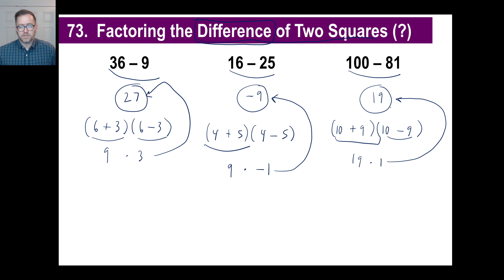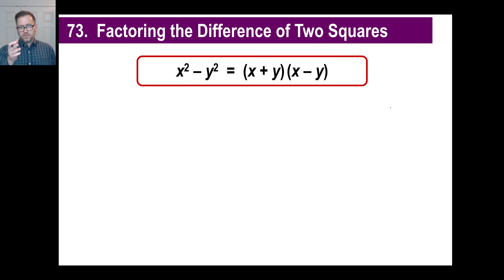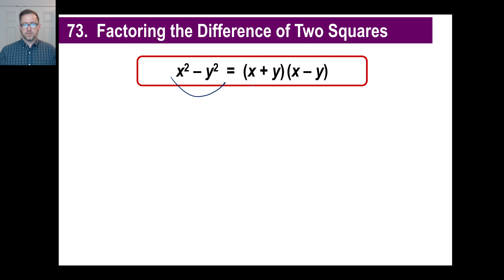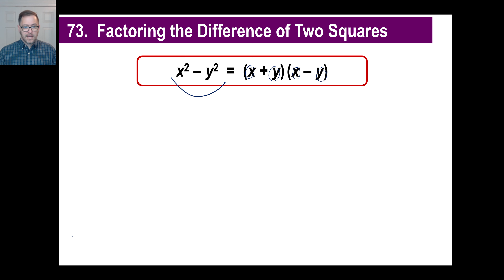Somebody went: wow, this works every single time. If it works with numbers, we can say it also works with x's and y's and a's and all that stuff. So here's what you want to write down or memorize: any time you have a number that is squared minus another number that is squared, you can factor it as (x + y)(x − y). You're taking the square root of x squared and putting it twice, and the square root of y squared twice — but making one of them plus and one of them minus.